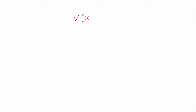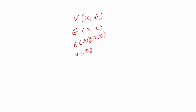These two parameters — velocity and volume fraction — are what you need to understand in multiphase flow reactors, along with their variation with time and position. You need velocity v as a function of position (x, y, z) and time t, and similarly volume fraction epsilon as a function of x, y, z, and t. You need not only the mean value but also how fluctuations are changing with location and time.